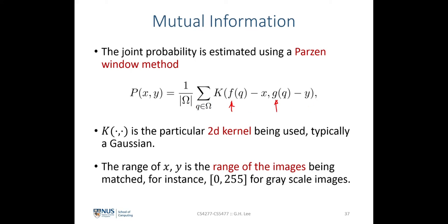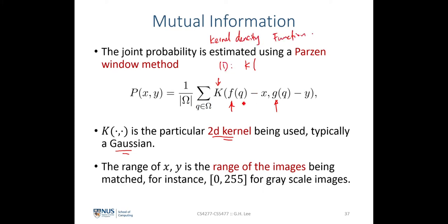Let me give you an illustration in a one-dimensional case. Suppose we have a kernel k defined as a 2D kernel, usually a 2D Gaussian. For a 1D kernel, also denoted k, we only have one random variable using the Parzen window approach, which is equivalent to estimating the kernel density function. In the 1D case, this kernel is defined over values of x, where for every value in the vector f, we subtract it with all values of x.